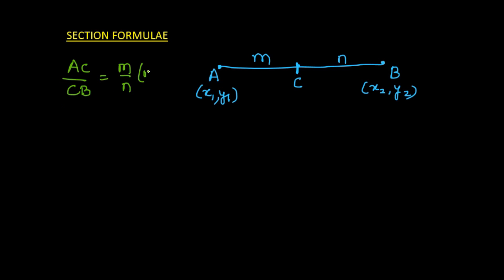Our aim here is to find the coordinates of point C. Let the coordinates of point C be x and y. I will not be going into proving the section formula — I'll just tell you the section formula directly and then we will do some examples based on it.